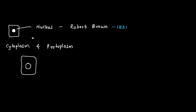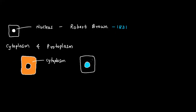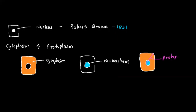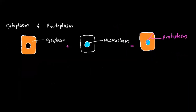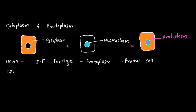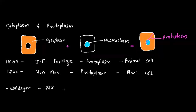Cytoplasm is the fluid present between the nucleus and the cell membrane. The fluid present inside the nucleus is called nucleoplasm. Together, the nucleoplasm and the cytoplasm are called protoplasm. In 1839, Johans E. Purkinje was the first scientist to coin the term protoplasm for animal cells. In 1846, Von Mohl coined the term protoplasm for plant cells. In 1888, Walden coined the term chromosome.